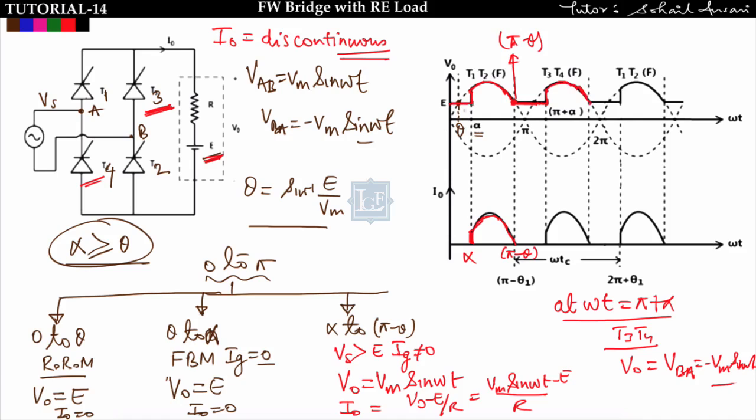To summarize: from 0 to α output voltage is E; from α to π−θ output voltage follows the input voltage; from π−θ to π+α output voltage is again E. Load current i₀ is obtained only from α to π−θ. Since this is RE type of load, i₀ is discontinuous because no inductor is present.